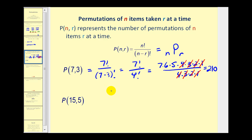I'd like to pause and take a look at this problem again. If we have seven items and we want to permute three of them at a time, we could model this with three positions. We have seven choices for the first position, six for the second, and five for the third. Which, as expected, gives us the same result of 210.